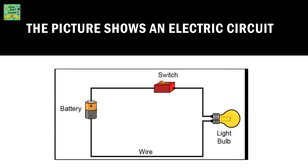The picture shows an electric circuit. It consists of a battery, a switch, a light bulb, and a wire.